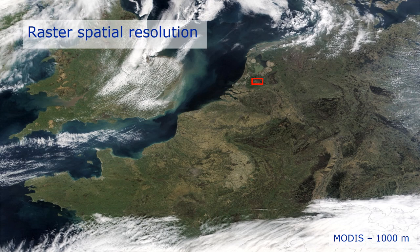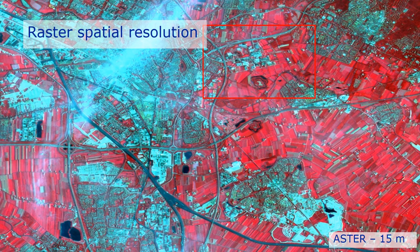Let's now zoom in a little bit on the Netherlands. Now we look at an Astro image. This image is not in true color but in so-called false color, where we made the reflection from vegetation in the near-infrared red. The spatial resolution is 15 meters, so each pixel is 15 by 15 meters.